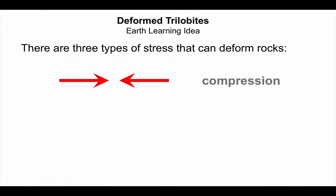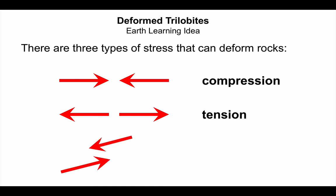We have compression, which is where opposing forces pushing in towards each other will squeeze the rock. We have tension, where opposing forces pulling away from each other will stretch the rock. And finally, shear stress, which is where we have forces running past each other, which may deform the rock in a different way.